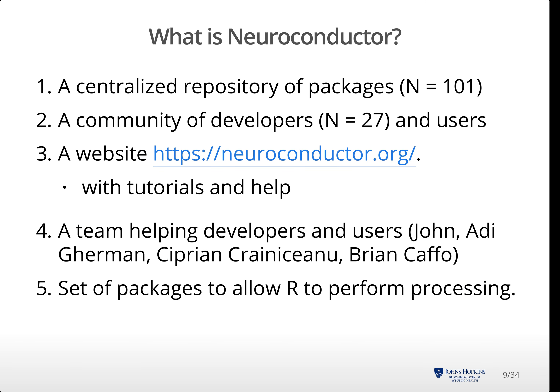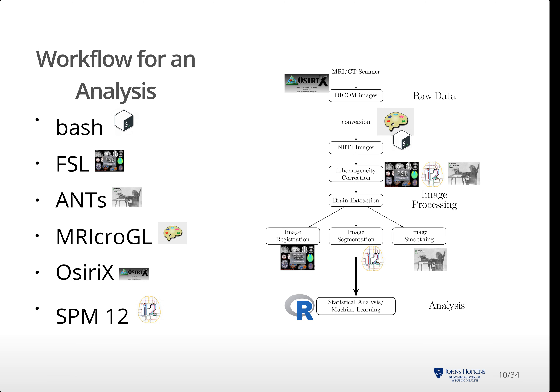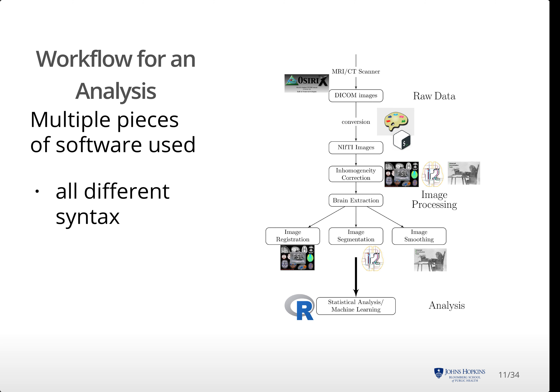NeuroConductor is a centralized repository of packages with a community of developers. We aim to help developers by making their packages stable, as well as provide workflows and tutorials for analysis. Our team has also written packages to provide common steps in image processing. When I started in imaging, I would do a number of different things in different imaging software suites, including FSL, SPM in MATLAB, some bash scripting, and then once all that was done, I would move over to R for analysis. This was a huge burden as many of the languages don't interact and have wildly different syntax.